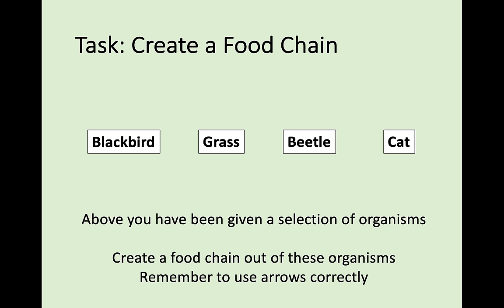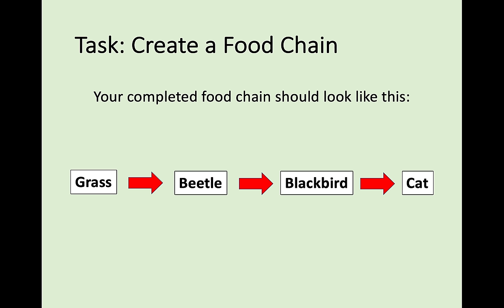There's a task for you: sort four organisms — grass, beetle, blackbird, and cat — into a food chain, remembering to use the arrows correctly. The answer is: grass is eaten by the beetle, the beetle is eaten by the blackbird, and the blackbird can be eaten by the cat. This effectively shows the energy flow from grass to beetle, beetle to blackbird, blackbird to cat.